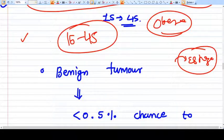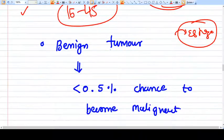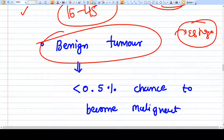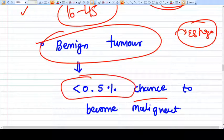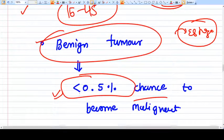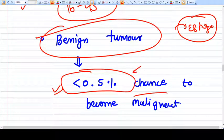I've told you already it's a benign tumor, but yes, there is a very small risk of becoming malignant - less than 0.5 percent. This risk is considered very low, so whenever you see a fibroid, it's not a malignant tumor, it's not a cancer at all.